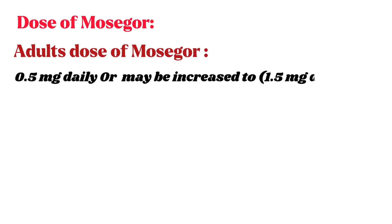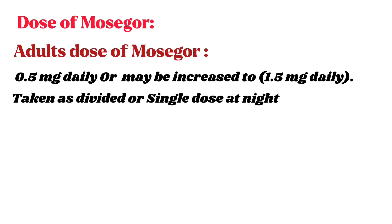Dose of Mosegor — Adults dose: 0.5 mg daily, or may be increased to 1.5 mg daily. Taken as a divided or single dose at night.